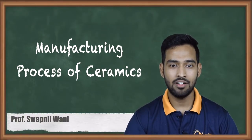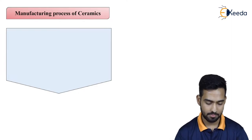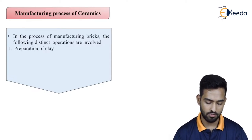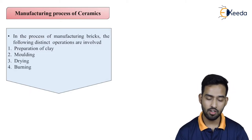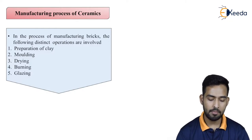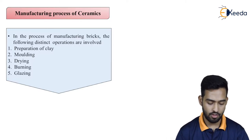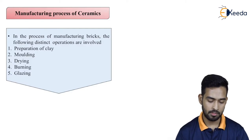Hello friends. In this video, we are discussing the manufacturing process of ceramics — how they are manufactured in industry. In the process of manufacturing, the following distinct operations are involved: first is preparation of clay, then molding, then drying, then burning, and last is glazing. Ceramic materials such as tiles require these same steps as bricks, with the addition of the fifth step: glazing. Now we will discuss each step in detail.